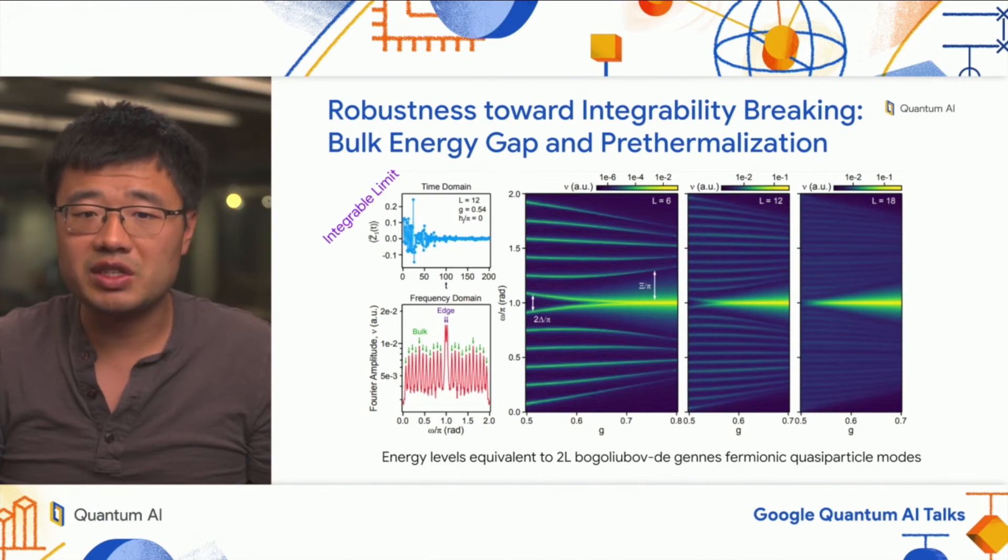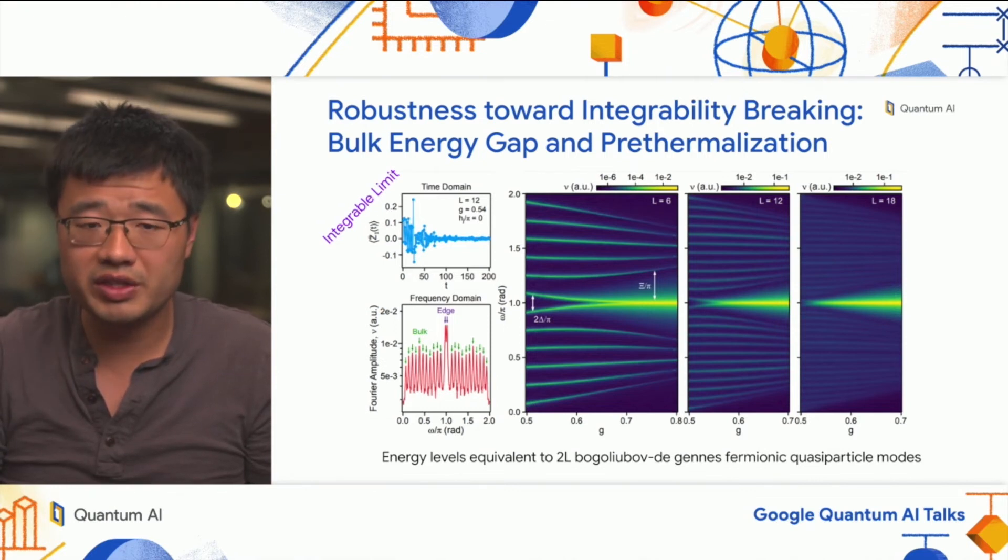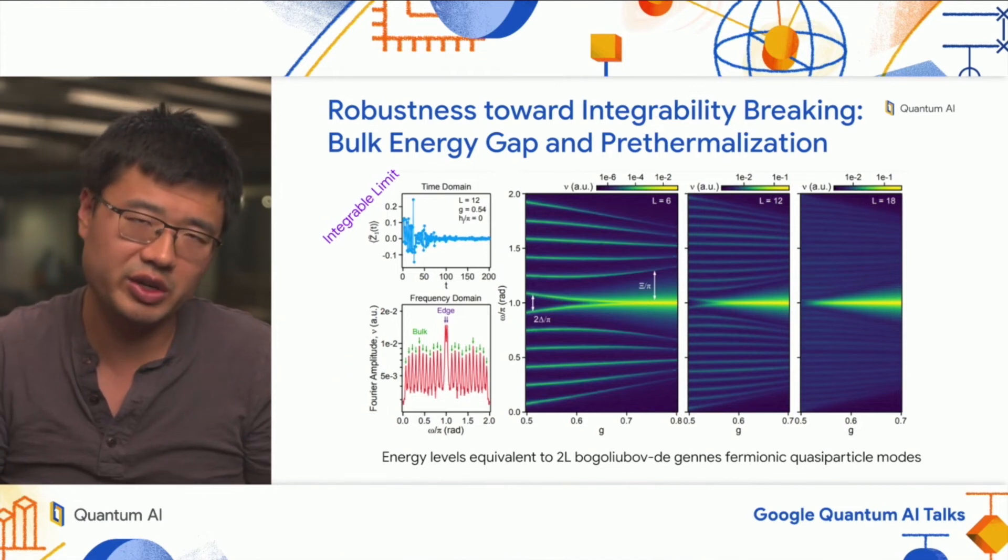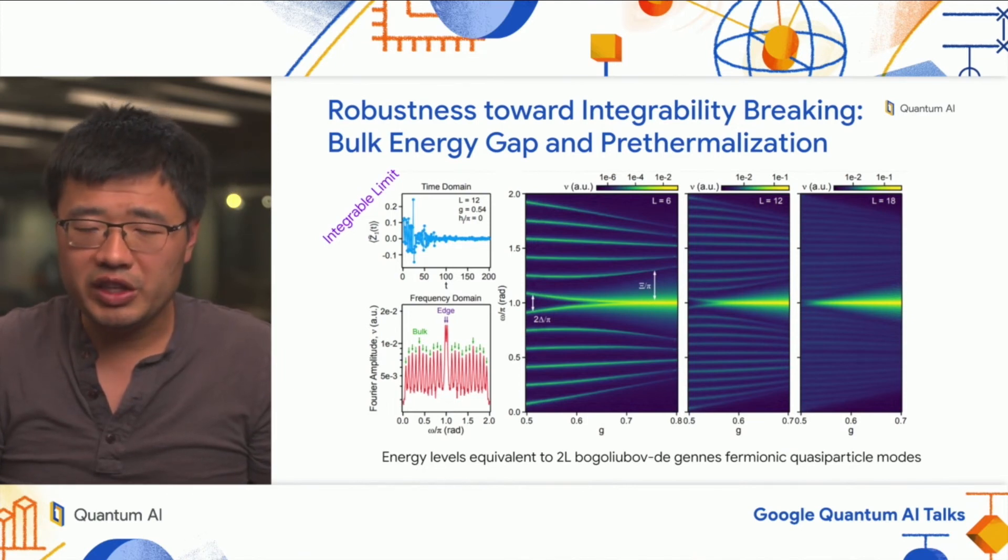You can map them out as a function of the control parameter G. When G equals 0.5, the system is in a critical regime where there's no topological phase. When G is bigger than 0.5, there's a topological phase where Majorana edge modes exist. The three color plots show the energy bands for three lengths of the 1D chain, from 6 qubits to 18 qubits. As a function of G, there is a gap opening between the bright band in the middle, which is Majorana edge modes, and the rest of the bulk energy bands. It is this gap that protects us from leakage or T1 decay. Even though integrability is broken, the large energy gap ensures any thermalization process happens at a very slow scale, the so-called pre-thermalization.